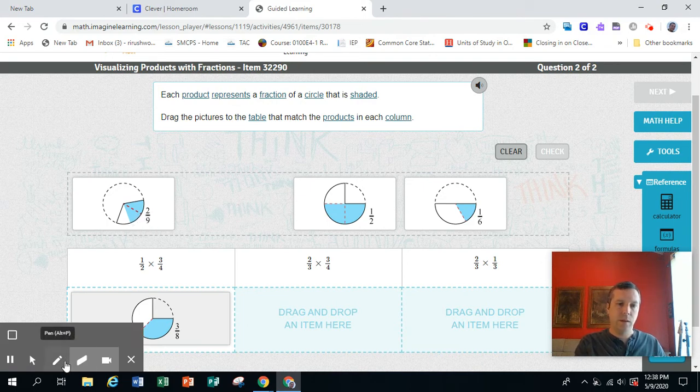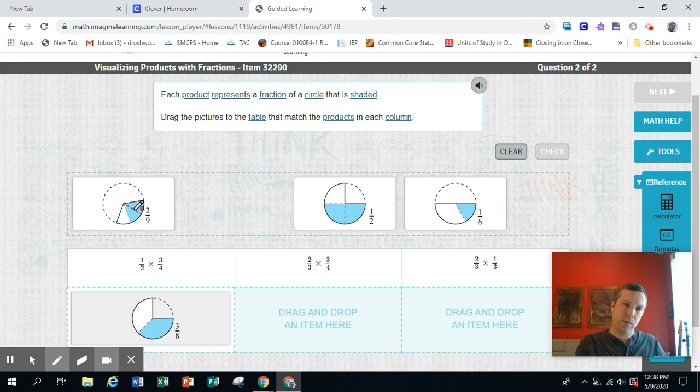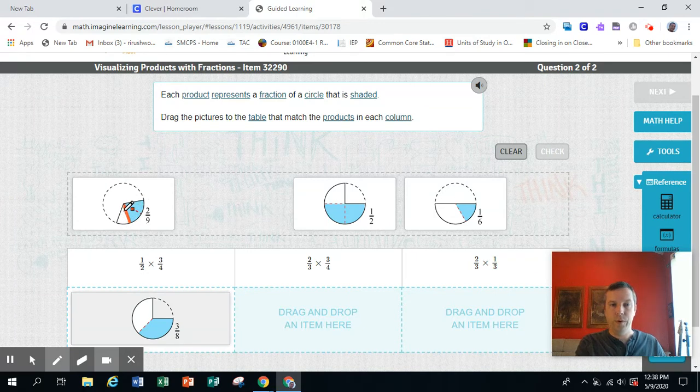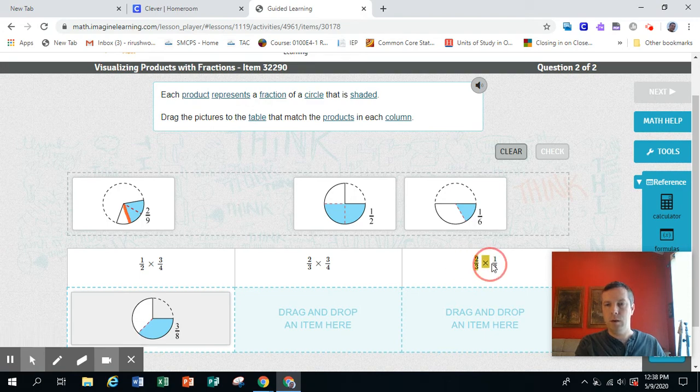But then it's split up. It's split right here. But what is this blue area? It looks like it's 2 thirds of the 1 third. 2 thirds of 1 third. That's right here. So this one goes here.